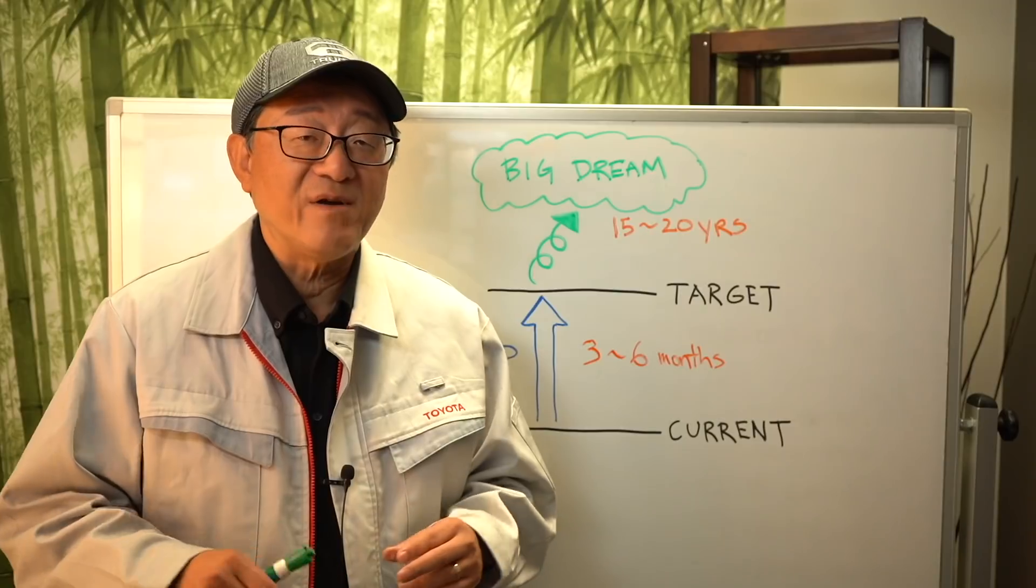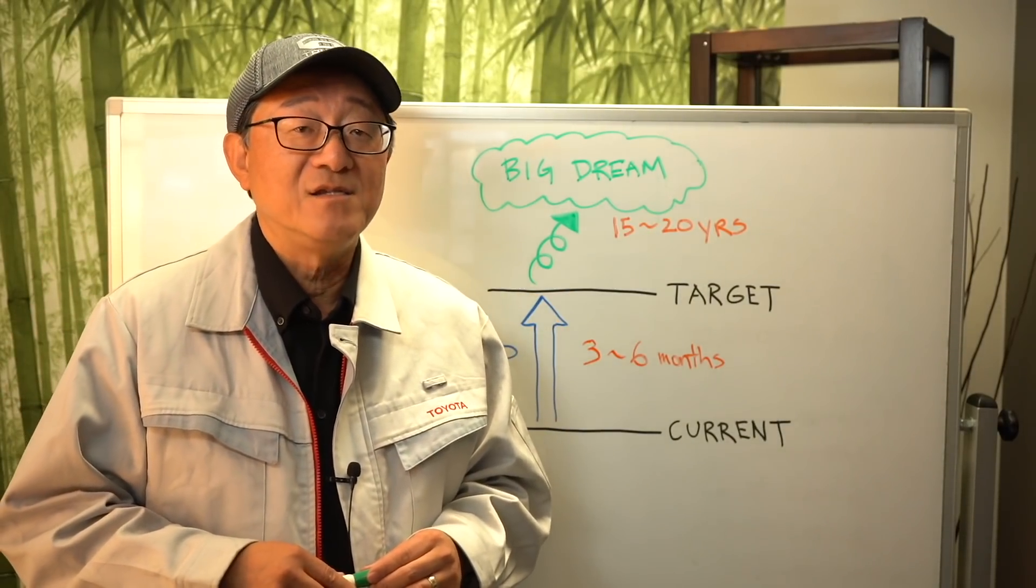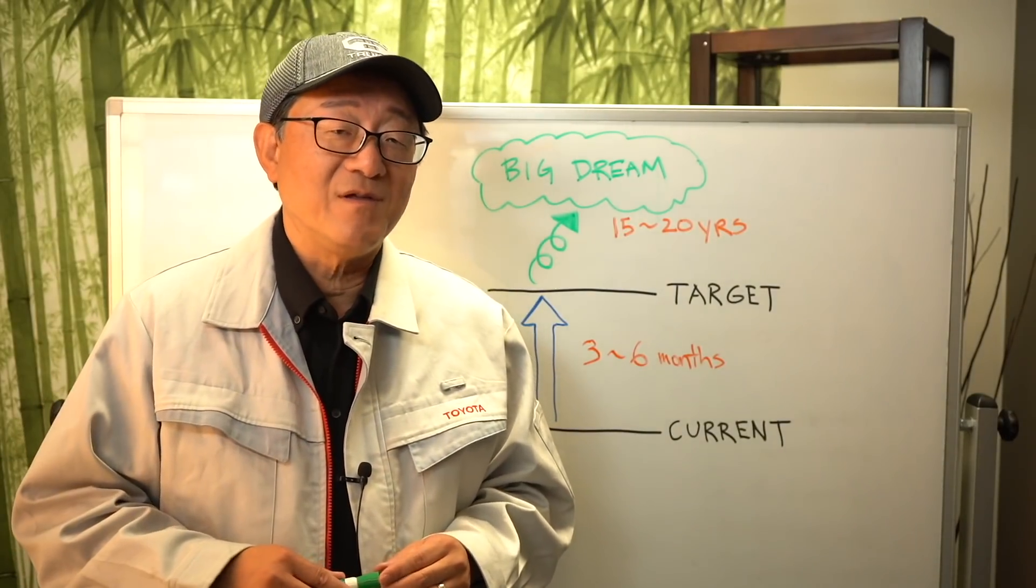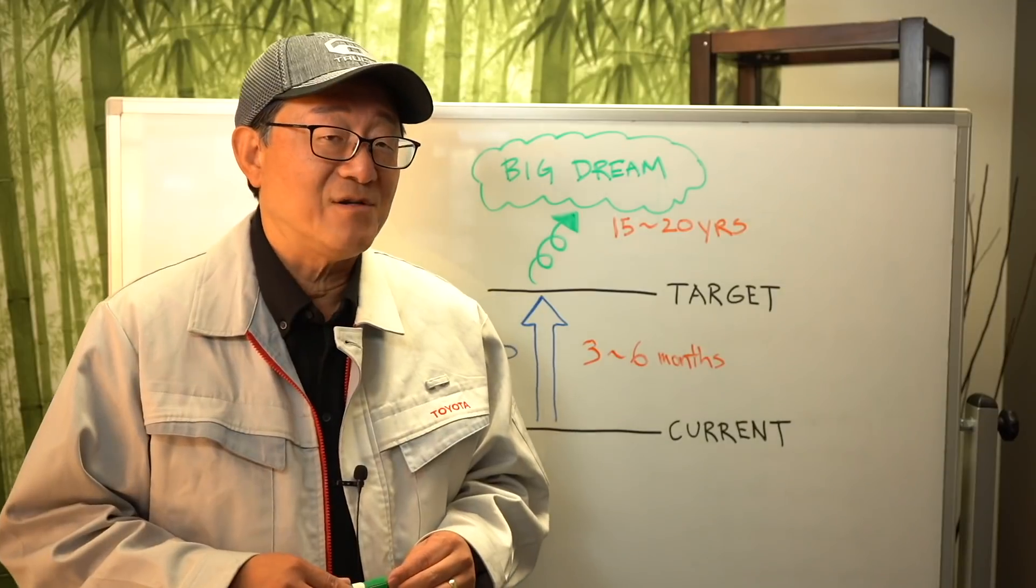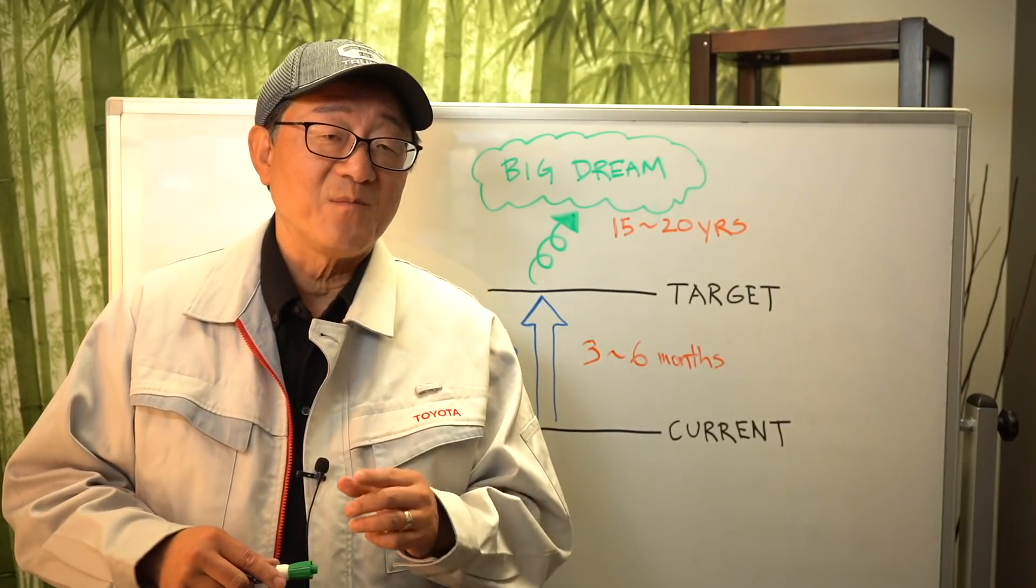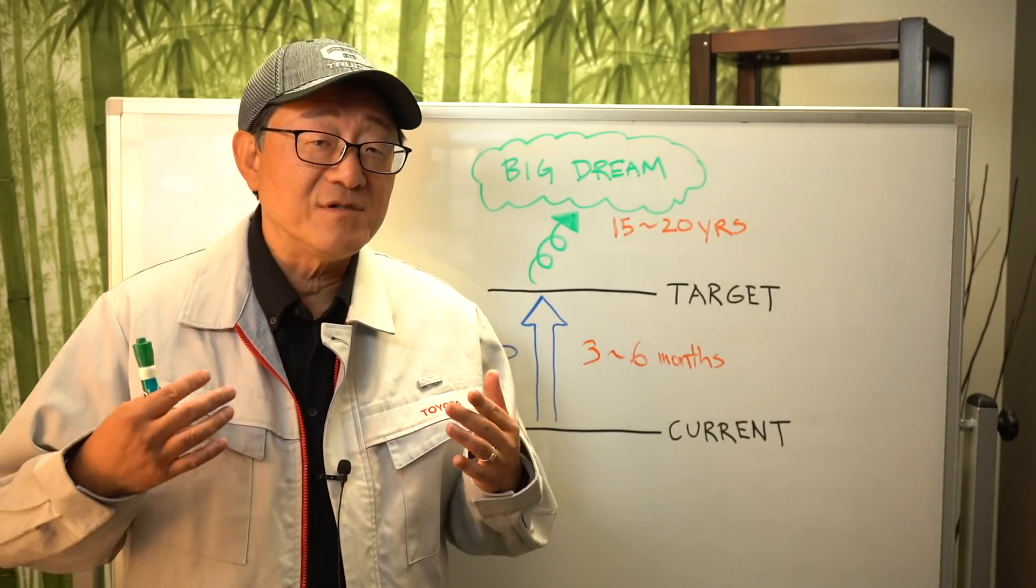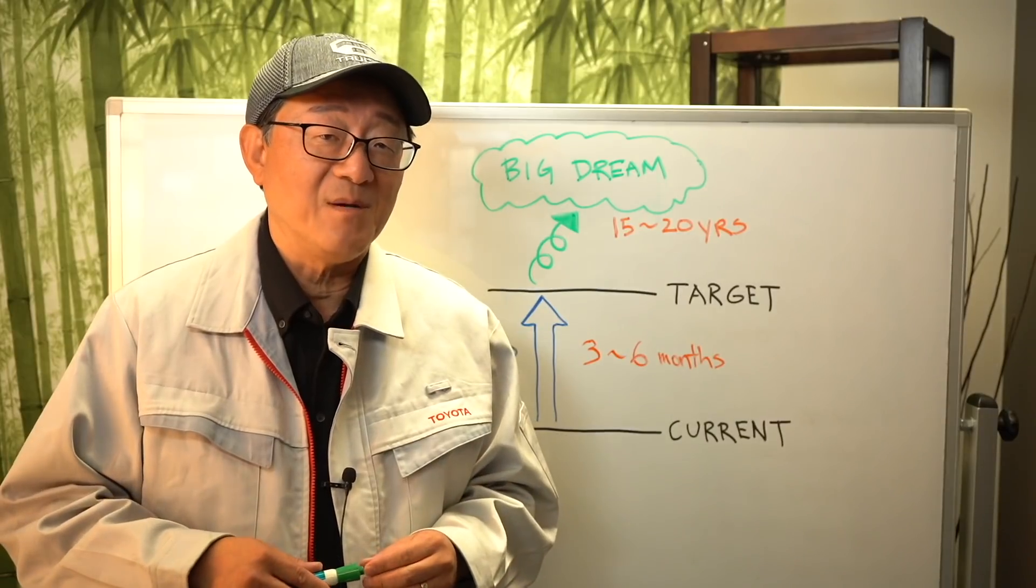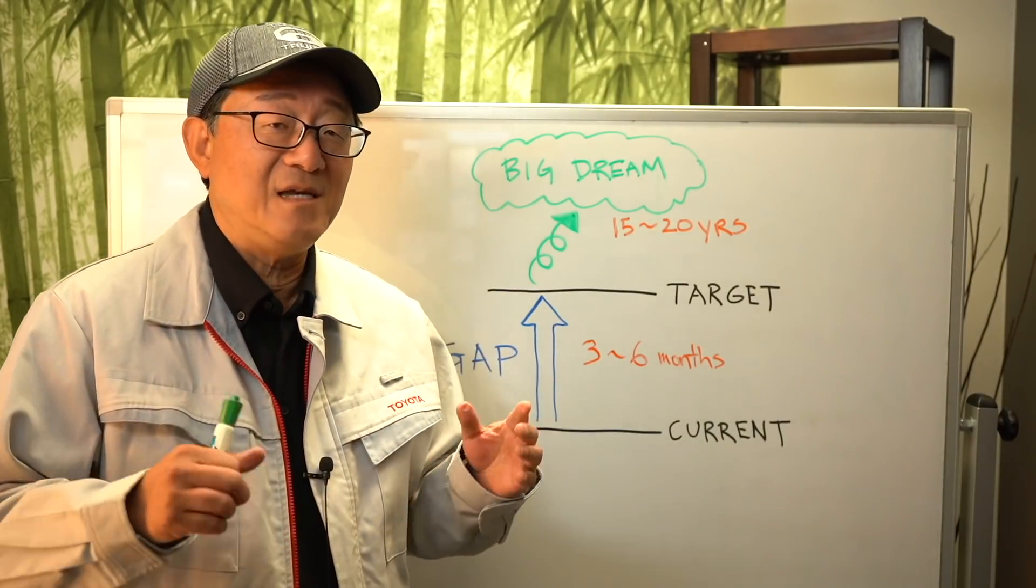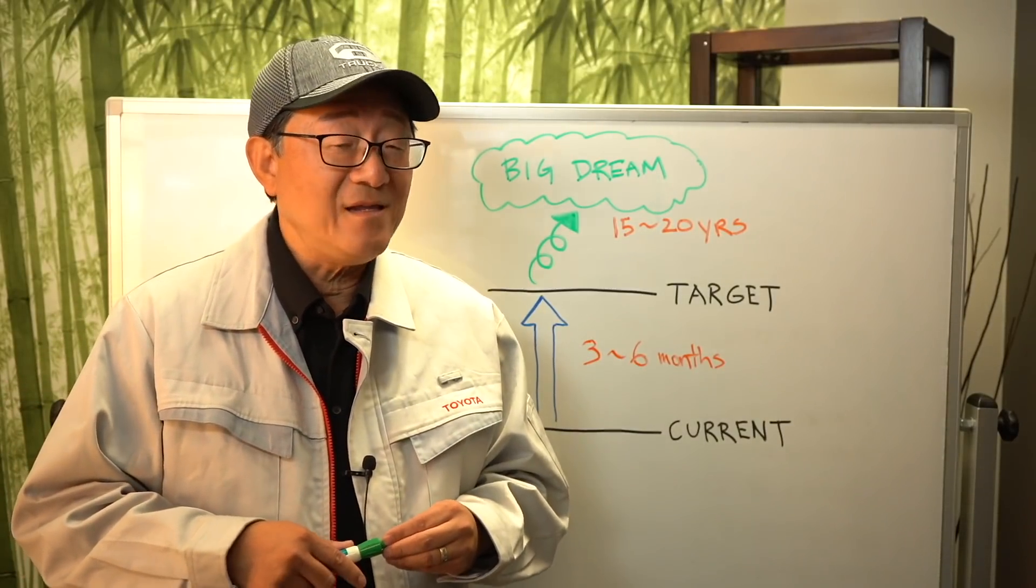But there is a kind of secret recipe or secret method that Toyota uses that is different from any other car companies. And I want to share with you that secret method or approach today, which could actually change your life because the methodology they use can be applied to personal life as much as it can be applied to business life. So first, let me explain to you what is the secret method or thinking that Toyota has that is different from any other company.